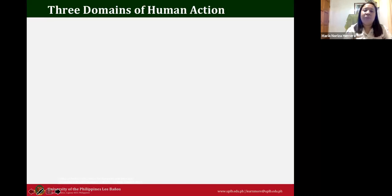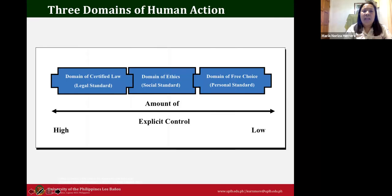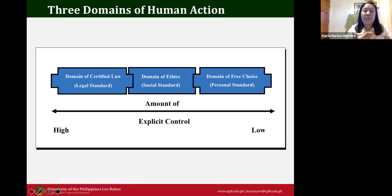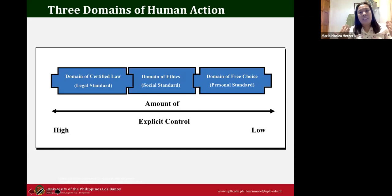There are three domains of human action: the domain of codified law, the domain of ethics, and the domain of free choice. The amount of explicit control by the organization varies across these domains.